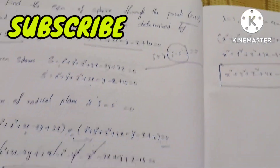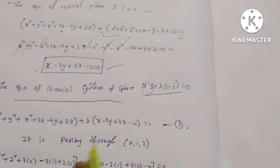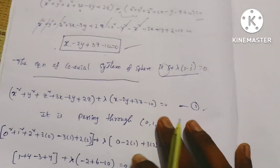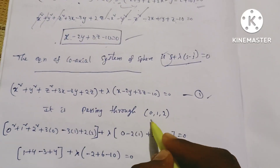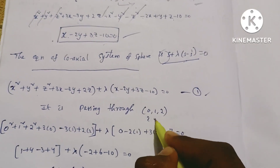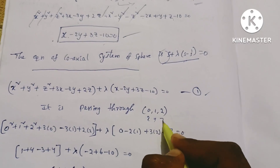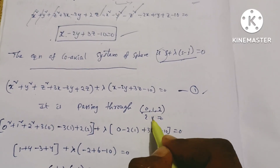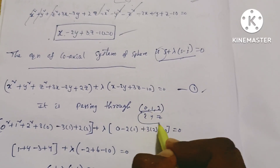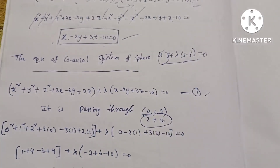The point is (0, 1, 2), so X equals 0, Y equals 1, Z equals 2. We substitute these values into the coaxial system equation.